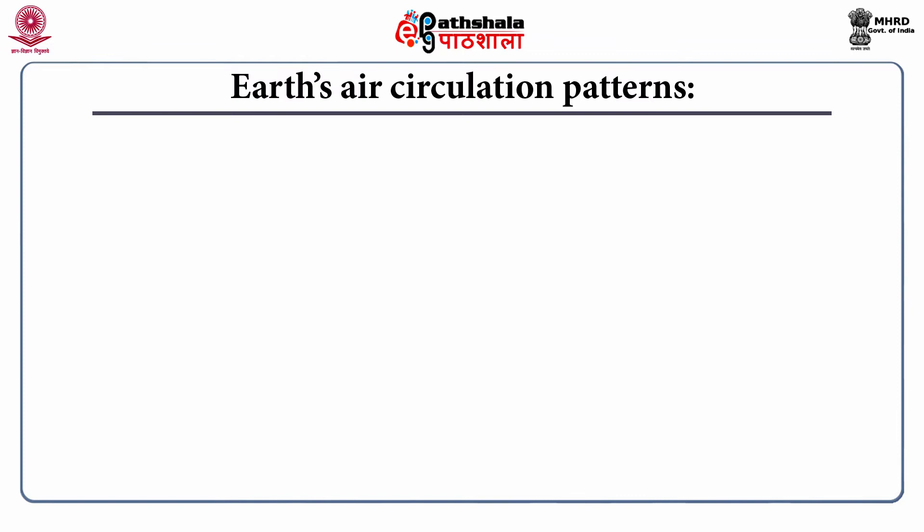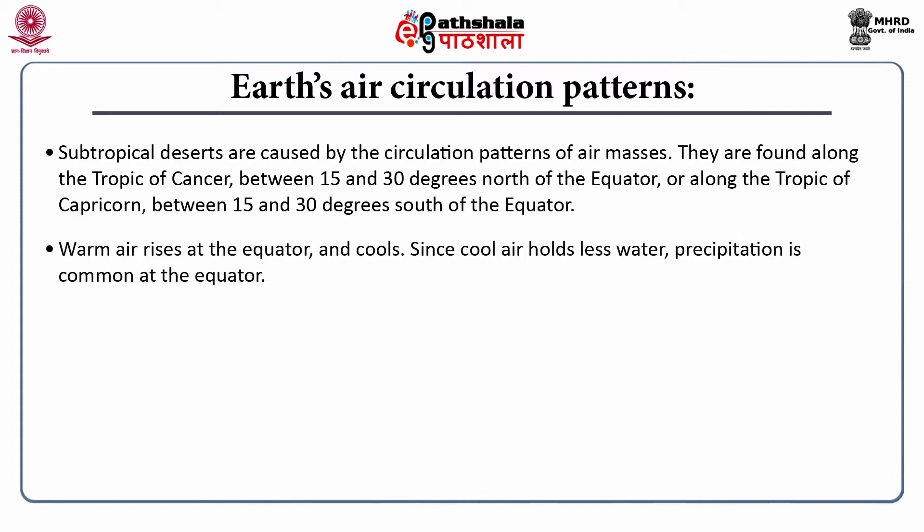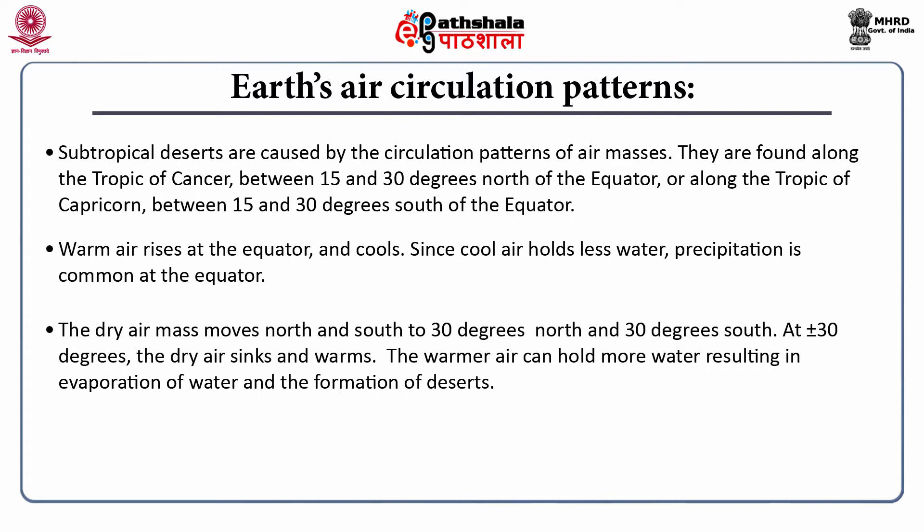Earth's air circulation pattern: subtropical deserts are caused by the circulation pattern of air masses. They are found along the Tropic of Cancer between 15 and 30 degrees north of the equator, or along the Tropic of Capricorn between 15 and 30 degrees south of the equator. Warm air rises at the equator and cools. Since cool air holds less water, precipitation is common at the equator. The dry air mass moves north and south to 30 degrees, where it sinks and forms warmer air that can hold more water, resulting in evaporation and the formation of deserts.